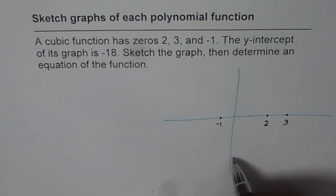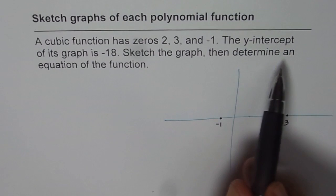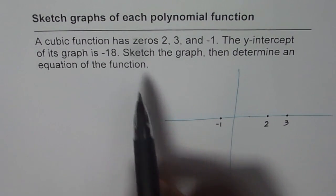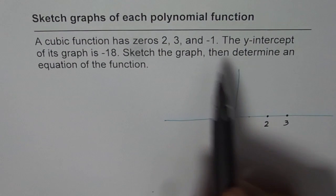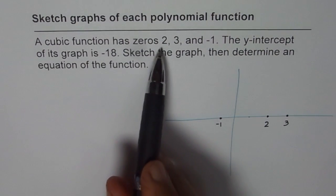Y-intercept of its graph is minus 18. So, somewhere on this line, but I am not really marking it for the time being. You will soon understand why. Now, since these three are zeros of cubic function. So, cubic means three zeros.